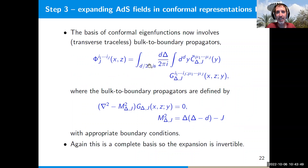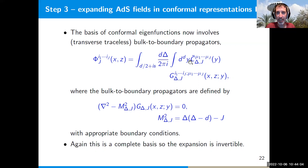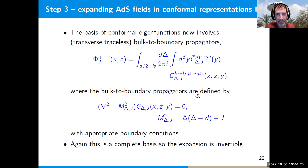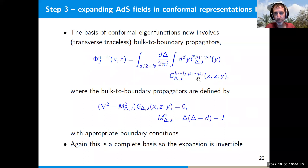Specifically, each spin-j field in AdS space can be expanded in representations with arbitrary values of Δ in the principal series d/2 + is, and arbitrary position y on the boundary, with coefficients c̃(Δ,j,y). The Clebsch-Gordan coefficients for this expansion are the bulk-to-boundary propagators from a bulk point (x,z) to a boundary point y for a field with scaling dimension Δ and spin j — they solve the Laplace equation in the bulk with the mass given by this specific value and with appropriate boundary conditions. This is a well-known decomposition of spin-j fields in AdS space into representations of the conformal group, and again it forms a complete basis so the expansion is invertible.